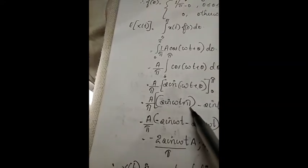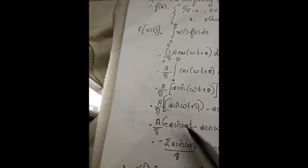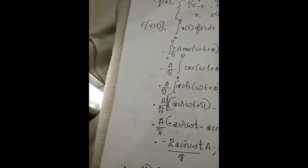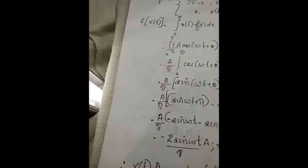So sin(ωt + π) = -sin(ωt). Therefore we have -sin(ωt) - sin(ωt) = -2·sin(ωt).